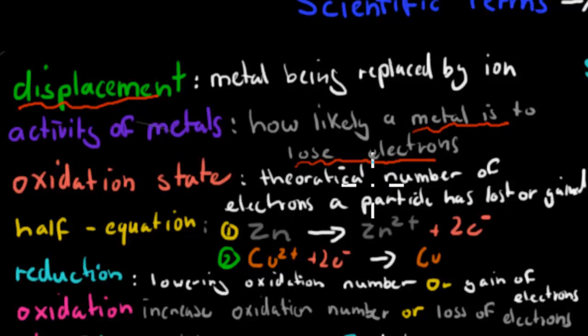Oxidation state was the theoretical number of electrons a particle has gained or lost. So for example we say that zinc if it's elemental, it's zero because it's neutral. Whereas if it's an ion, zinc 2+ for example, then it has lost two electrons. So that oxidation state tells us how much it's lost or gained.